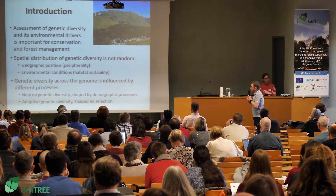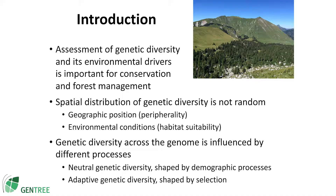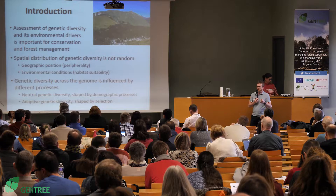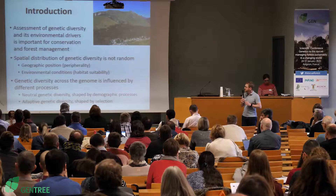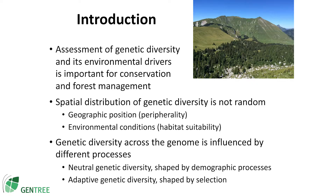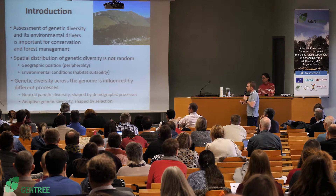We all know that the assessment of genetic diversity and its environmental factors driving this diversity are of enormous importance for conservation and forest management, especially in times of massive human-use changes like land-use change or climate change. It's important to determine the spatial distribution of genetic diversity, which is not distributed randomly across space. Among others, it's influenced by the geographic position of the population — what I call peripherality — and by environmental conditions, which is the habitat suitability of certain sites. Across the genome, genetic diversity is also not distributed evenly: neutral genetic diversity is shaped mainly by demographic processes, while adaptive genetic diversity is shaped by selection.